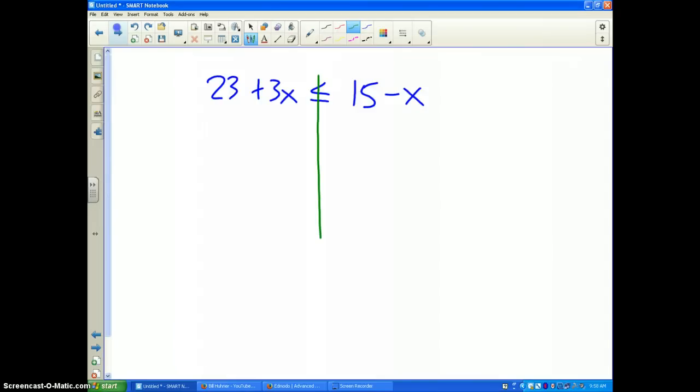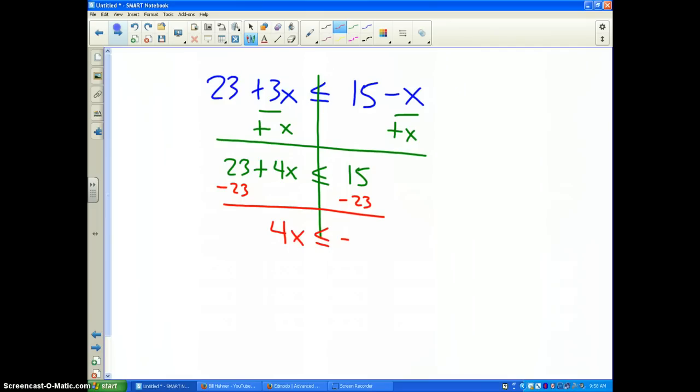All right, draw the balance scale line. I notice I've got to put my x's together first. This is minus 1x, so I'm going to add 1x to both sides and I get 23 plus 4x is less than or equal to 15. Now I'm going to subtract 23 because I've got to get the x by itself, and I have 4x is less than or equal to negative 8.